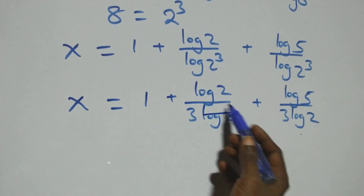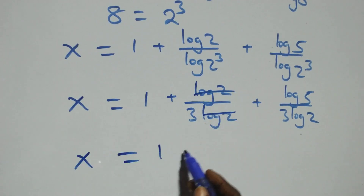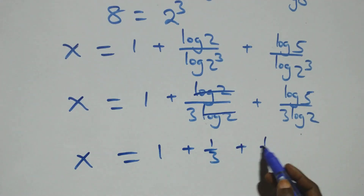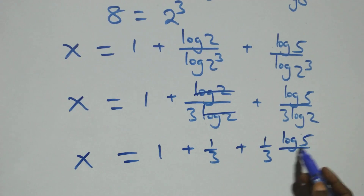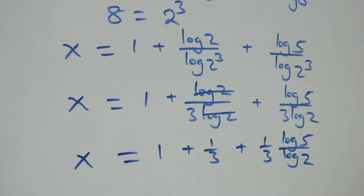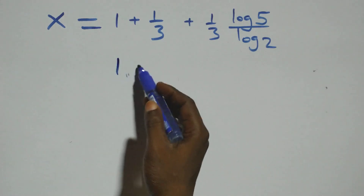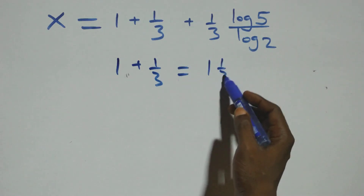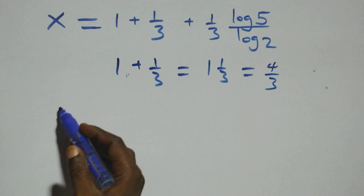Log 2 cancels each other in the second term, leaving 1 over 3. So we have X equals to 1 plus one-third plus log 5 over log 2, times one-third.